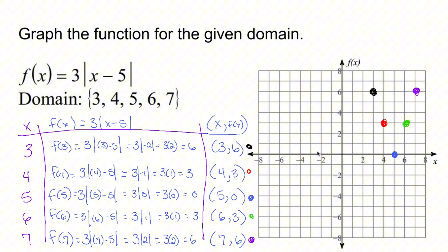Now if you're looking at this and wondering why it's a V shape rather than a straight line — absolute values are going to have that behavior. They make V shapes because things stay positive. That's what I like to do with my attitude, and that's what this problem does: stay positive. I hope this helps, thanks for watching.